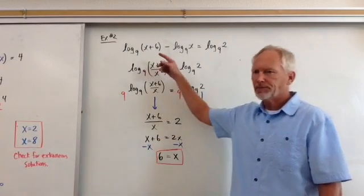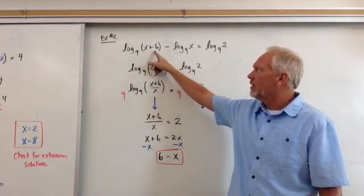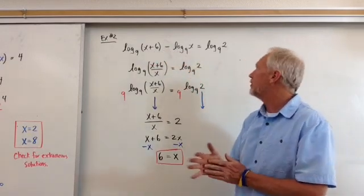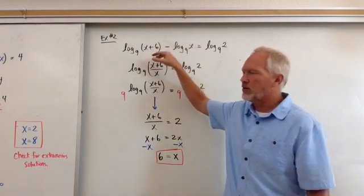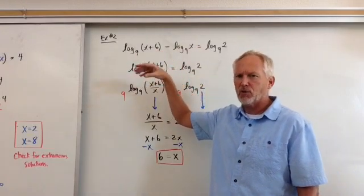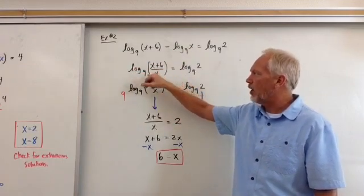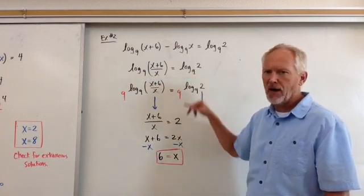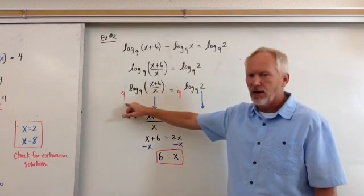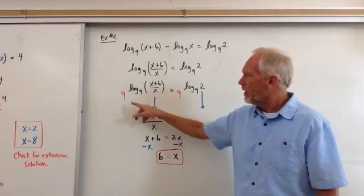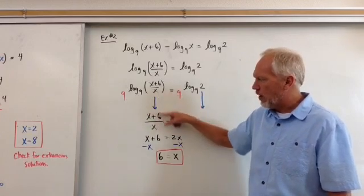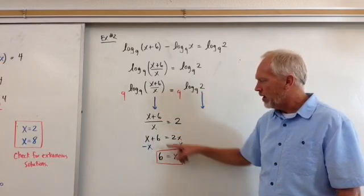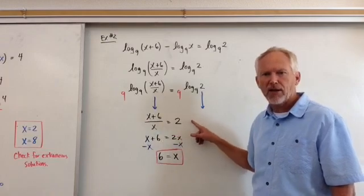Next one, example number 2. We have log base 9 of x plus 6 minus log base 9 of x equals log base 9 of 2. So we can rewrite this again using the property where division was subtraction, subtraction turned into division, so we get log base 9 of x plus 6 divided by x equals log base 9 of 2. And then again, we apply the same base, common base 9 on each side, and the middle drops down, so x plus 6 divided by x equals 2. The 2 will drop down here, and we get x plus 6 equals 2x, after we multiply on each side of the equation by x.